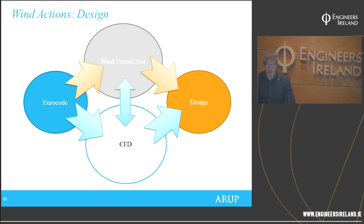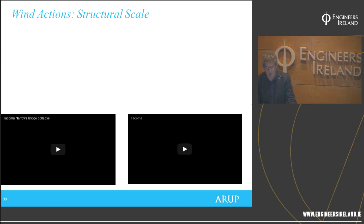Wind tunnel testing tends to be quite expensive and requires smaller scale models for large buildings and bridges, with difficulties in terms of similarity and quickly changing the model design. CFD gives you the benefit of being able to change between different models very quickly, making it more suited to an iterative design approach and allowing you to optimise your solution.